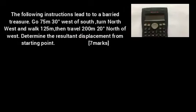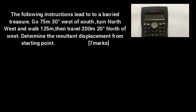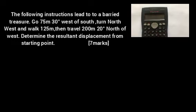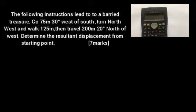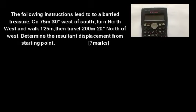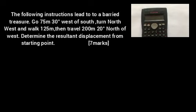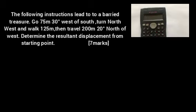The following is the question: The following instructions lead to a buried treasure. Go 70 meters, 30 degrees west of south. Turn northwest and walk 125 meters. Then travel 100 meters, 20 degrees north of west. Determine the resultant displacement from the starting point.